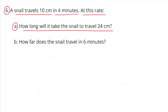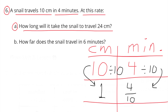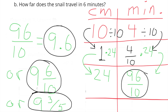Number 6. A snail travels 10 centimeters in 4 minutes. At this rate, how long will it take to travel 24 centimeters? I made a table with centimeters on the left and minutes on the right: 10 cm in 4 minutes. To find the unit rate, divide 10 cm by 10 to get 1 cm, and divide 4 minutes by 10 to get 4/10 of a minute. Then multiply 1 × 24 to get 24 cm, and multiply 4/10 × 24 to get 96/10 of a minute, which equals 9 and 6/10, or 9 and 3/5 minutes.